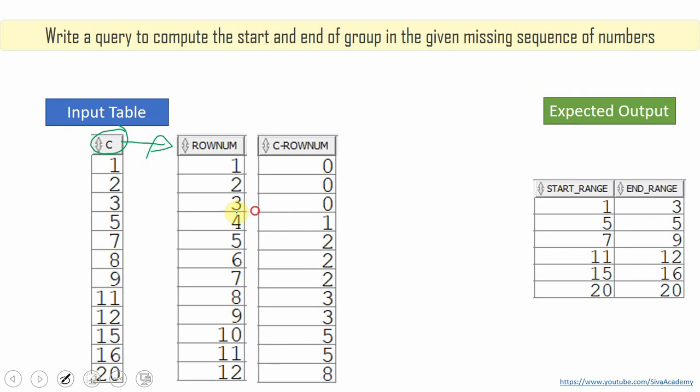So in this case, if you see 1 minus 1, it is 0. Same way 2 minus 2, it is 0. Similarly, 3 minus 3, it is 0. So in the next case, it is 5 minus 4, we are getting 1. Same way for the next set 7, 8, 9, if you see, we are getting 2.